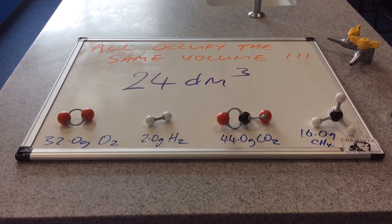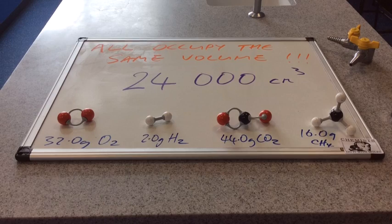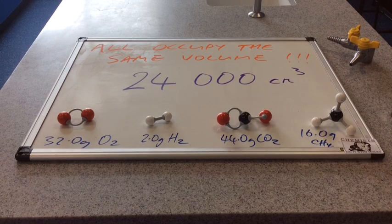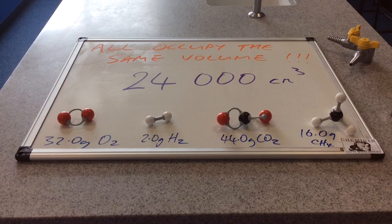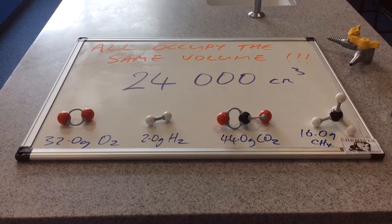So what is that volume? I hear you cry. It's 24 cubic decimeters, which is the same as 24,000 cubic centimeters. So you can see there's a conversion factor of a thousand to go from decimeters cubed to centimeters cubed.